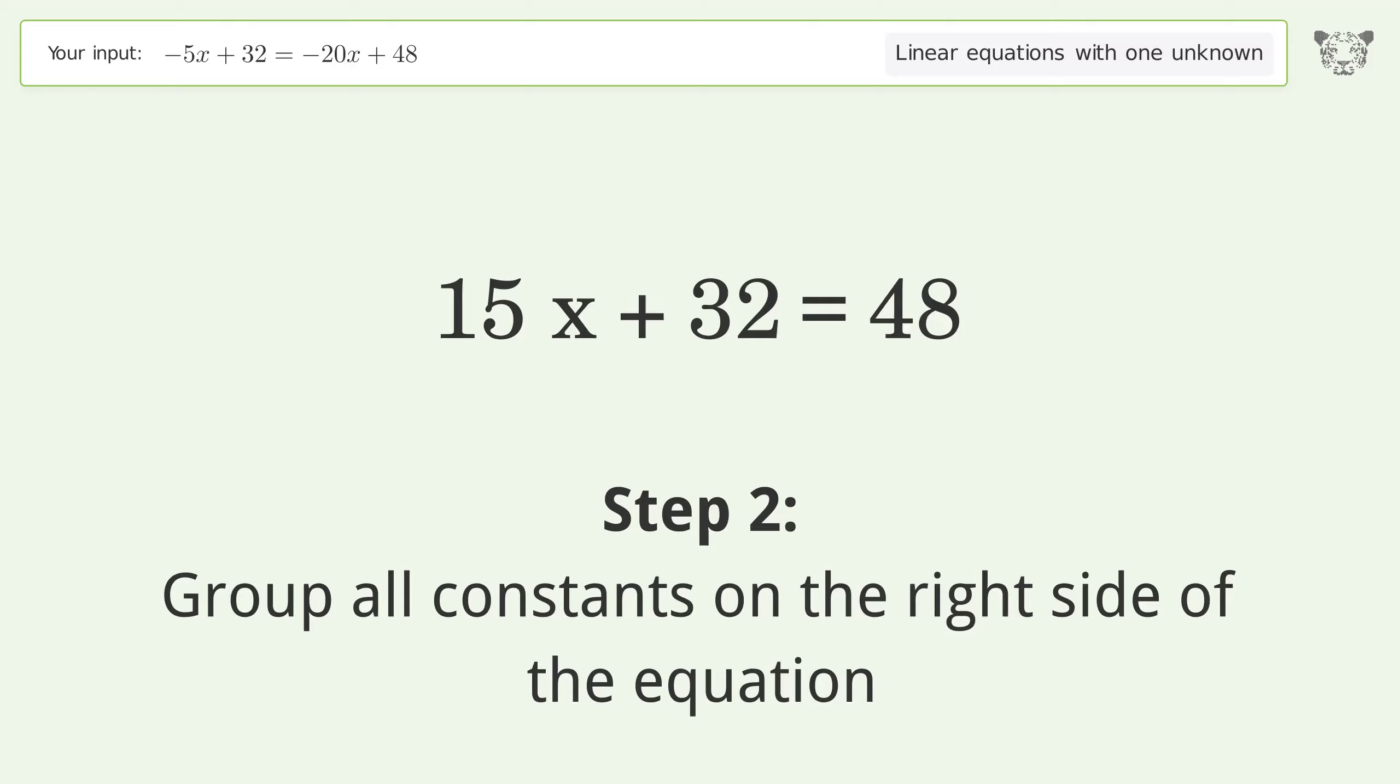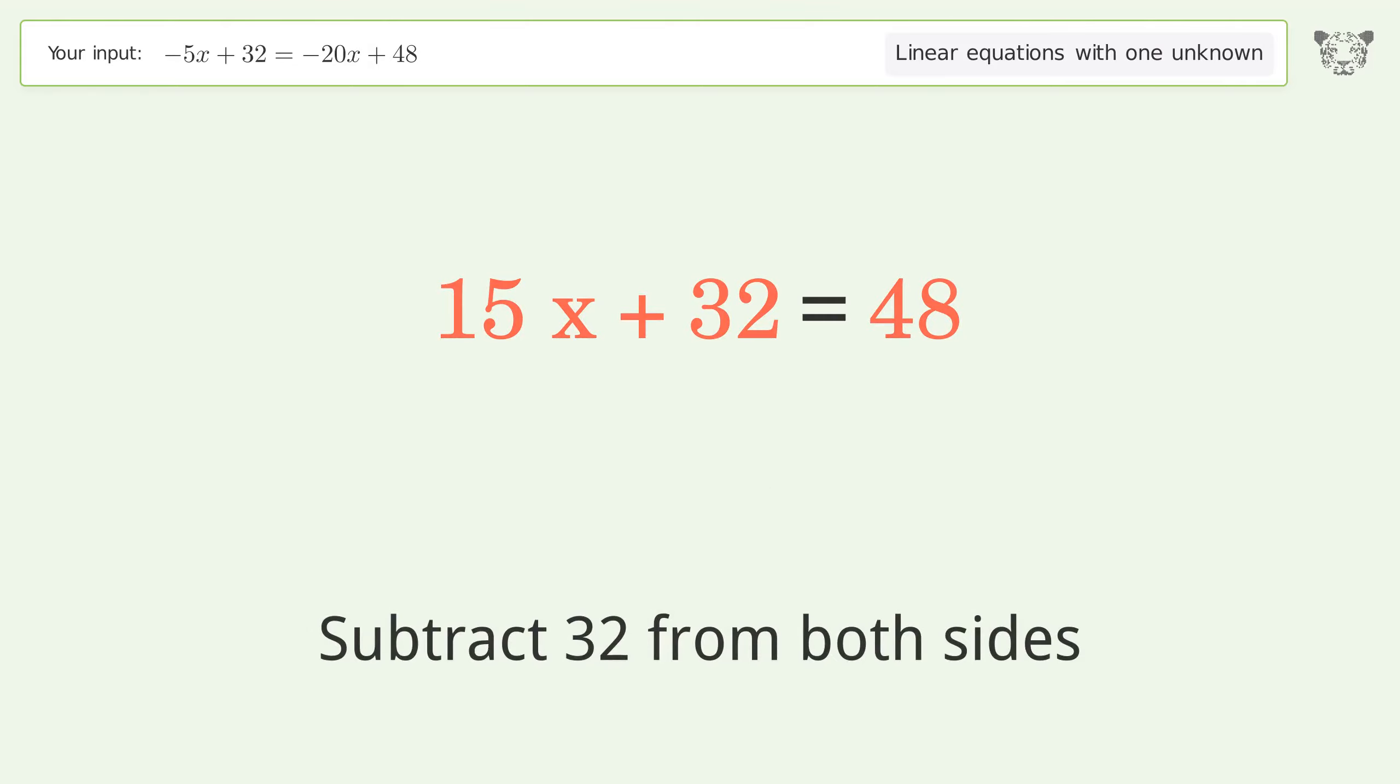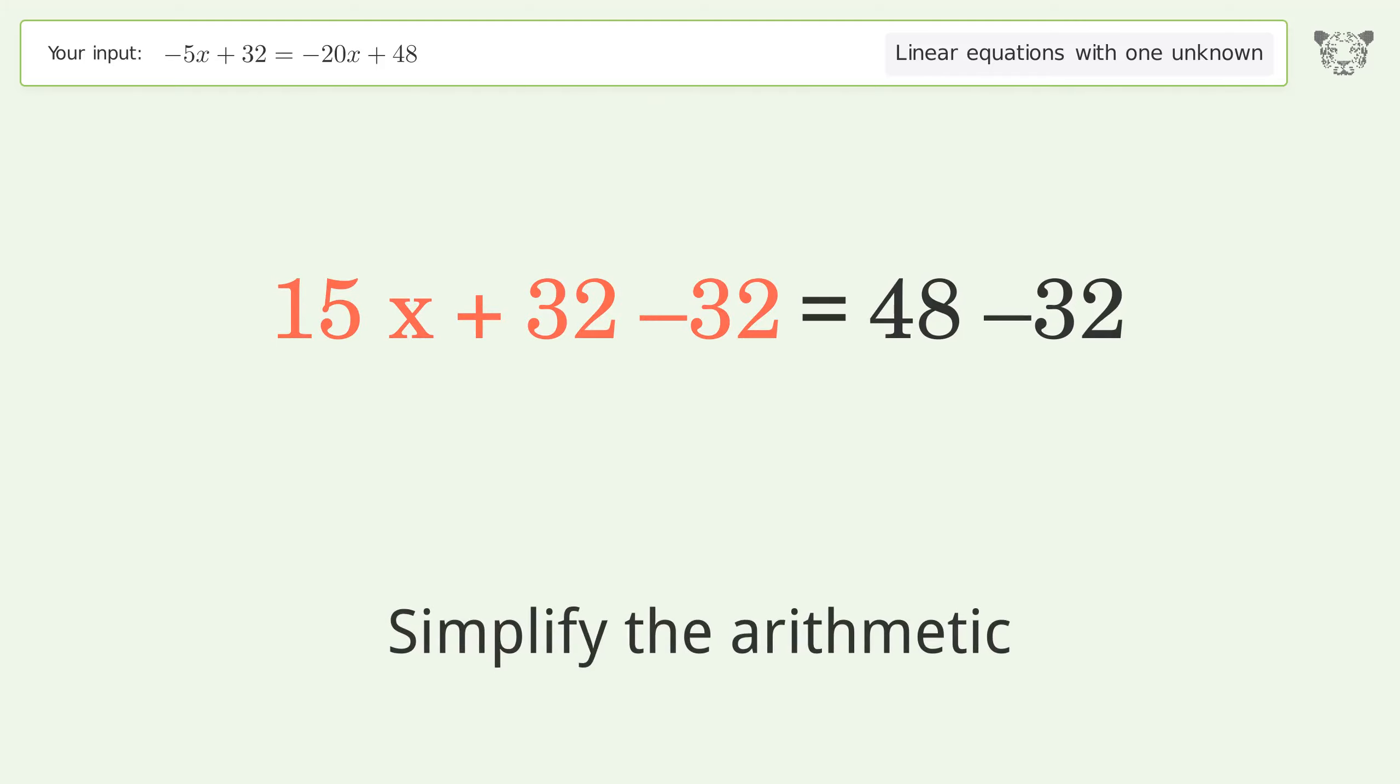Group all constants on the right side of the equation. Subtract 32 from both sides and simplify the arithmetic.